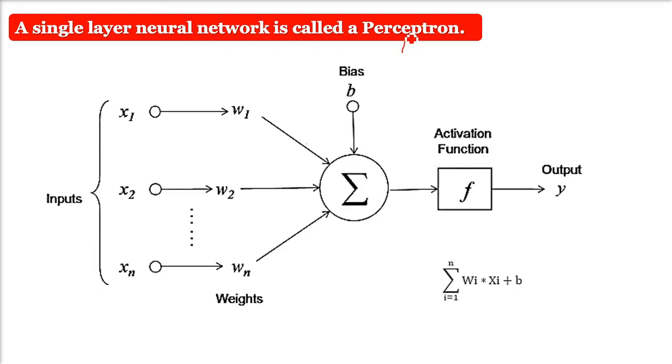A single layer neural network is called a perceptron. It gives you a single output. Here you see we have x1, x2, xn - these are various inputs and these are called the independent variables to the network.